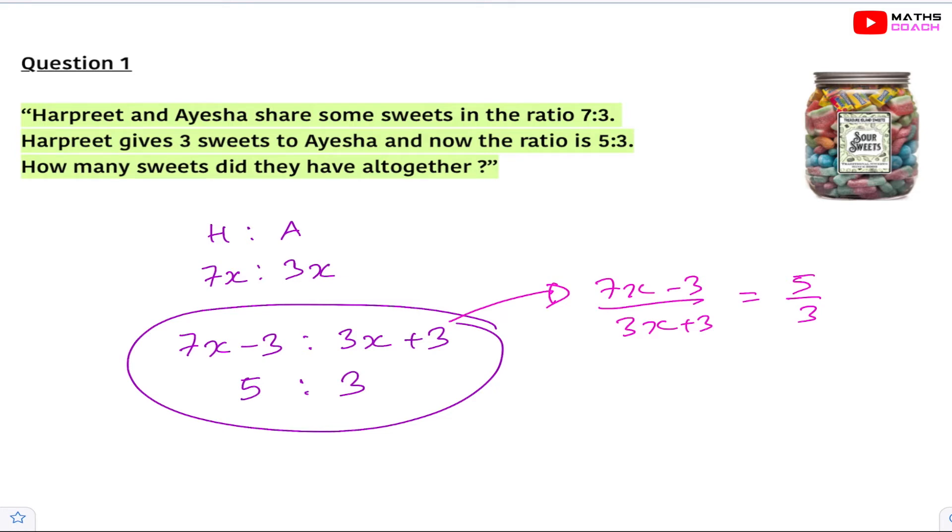So we'll cross multiply. So we will now have 3 times 7x minus 3 on this side and we'll have 5 times 3x plus 3 on the other side, and then we'll expand the bracket. So we'll get 21x minus 9 is equal to 15x plus 15.